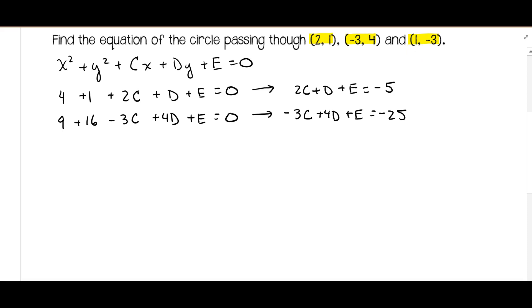And our last point (1, -3), this is going to be 1 plus 9 plus c minus 3d plus e is equal to zero. Move the constants over to the right. We have c minus 3d plus e is equal to negative 10.